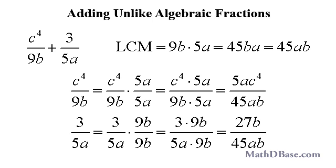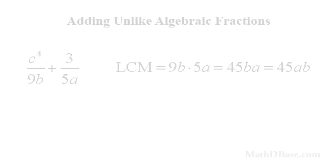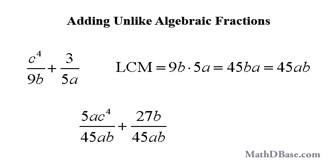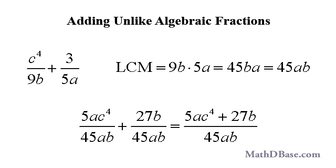The denominator of 3 over 5a lacks the factor of 9b. Multiplying both numerator and denominator by that factor, 3 over 5a becomes 27b over 45ab. See combining fractions in the Fractions Anticast series for a review of how to find LCM and LCD of fractions. Adding the numerators of the two like fractions, we get 5ac to the 4th plus 27b all over 45ab.